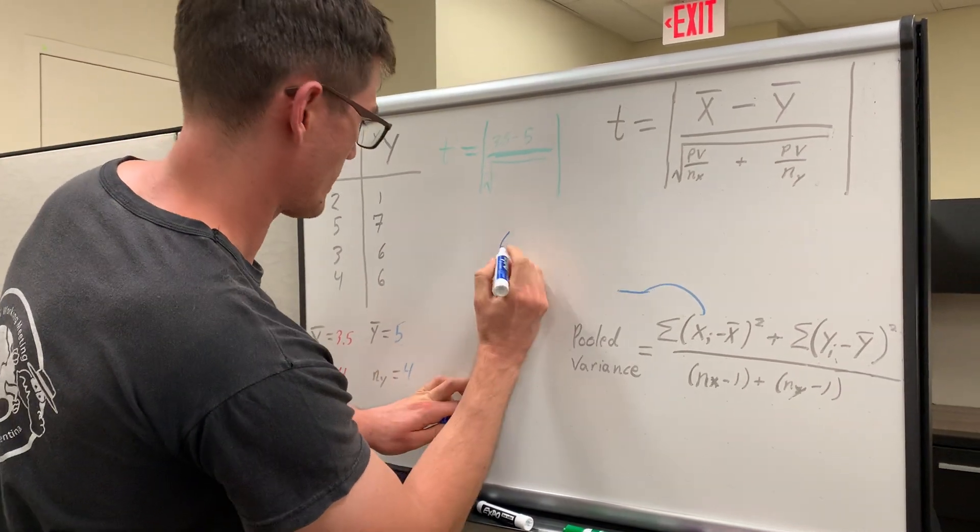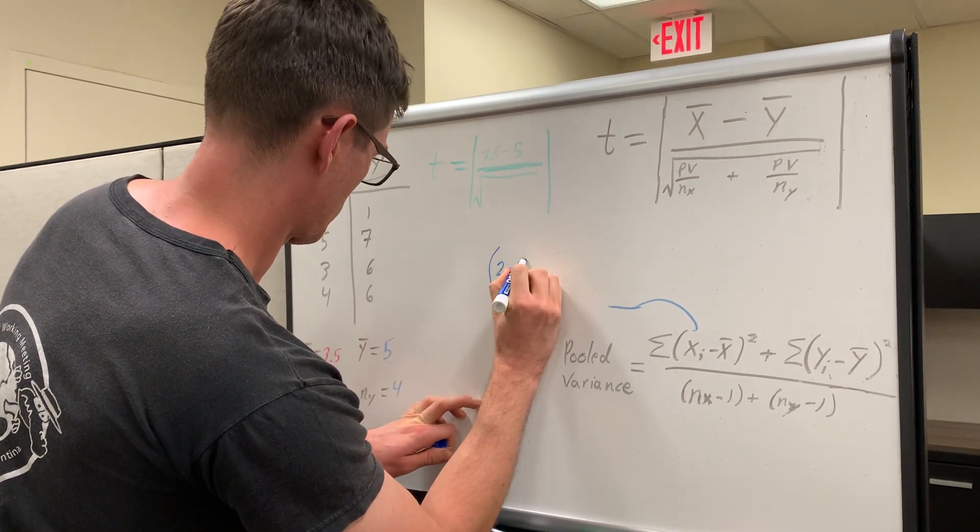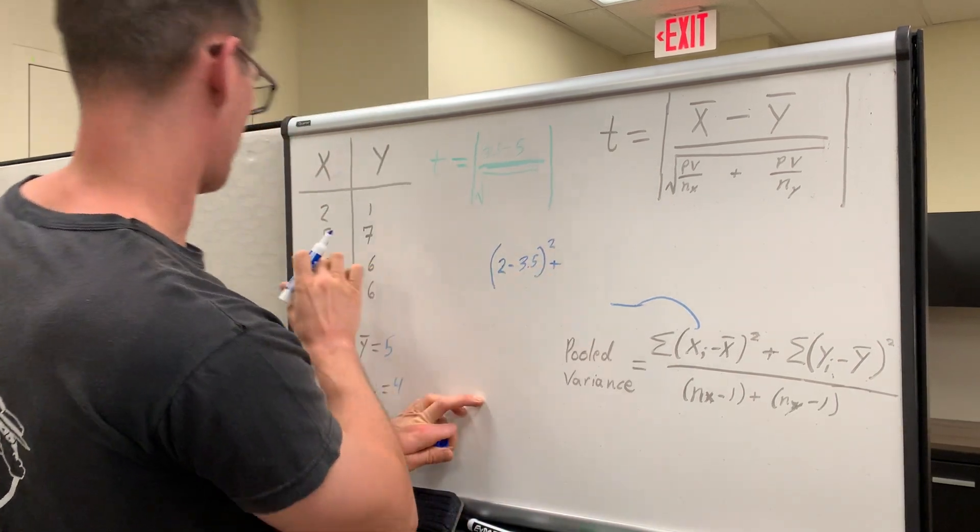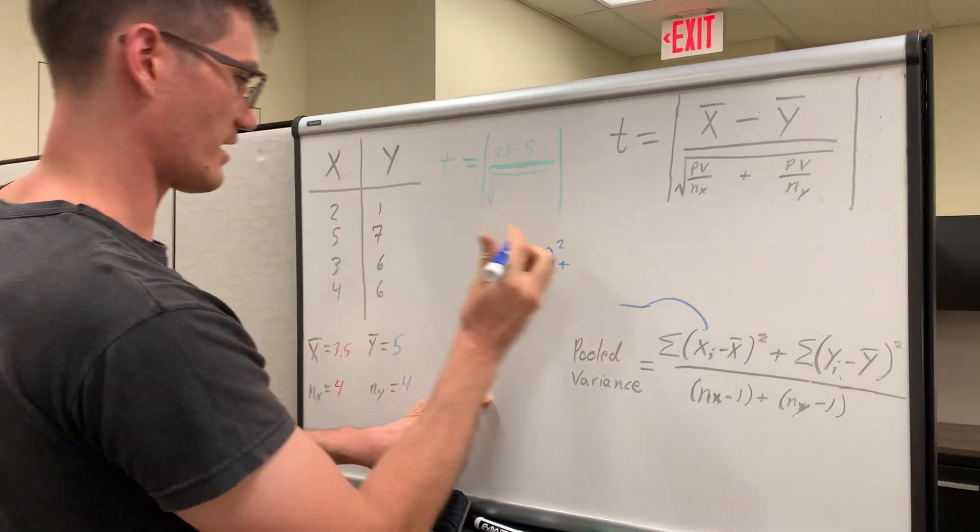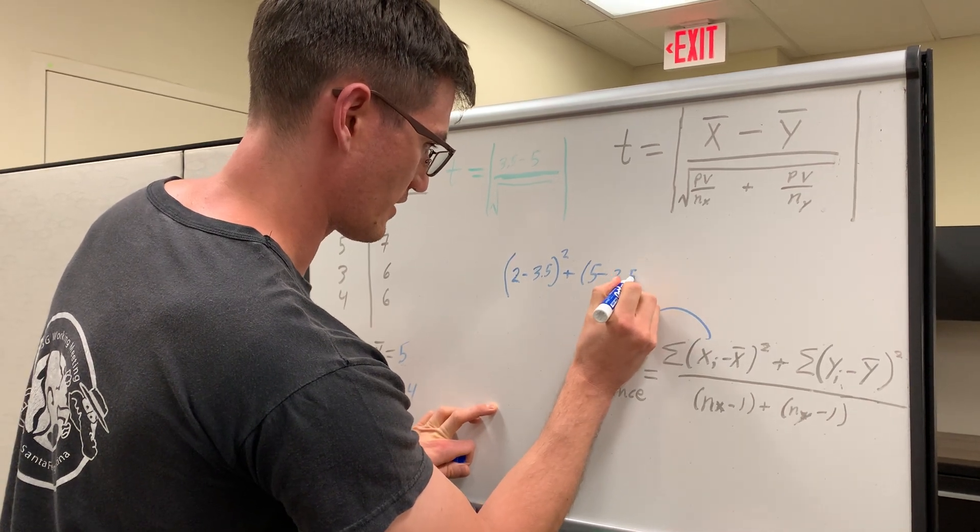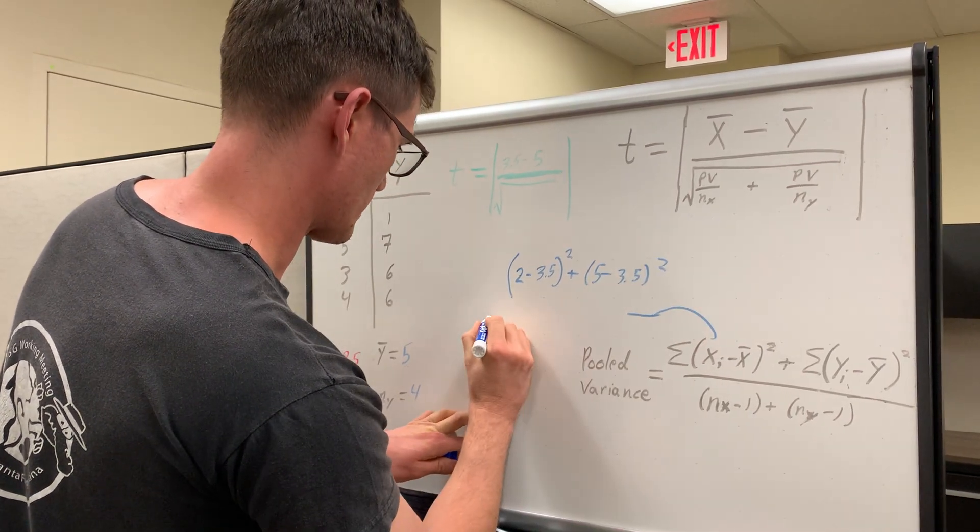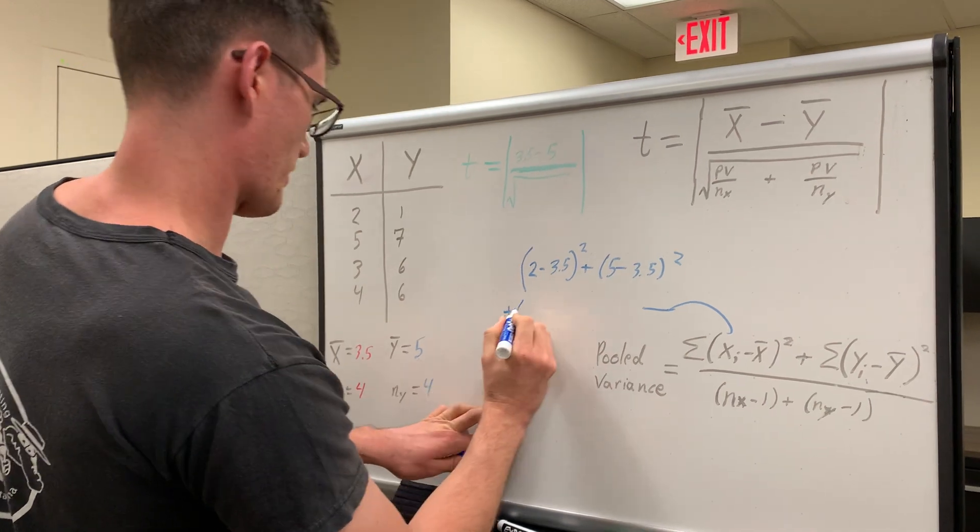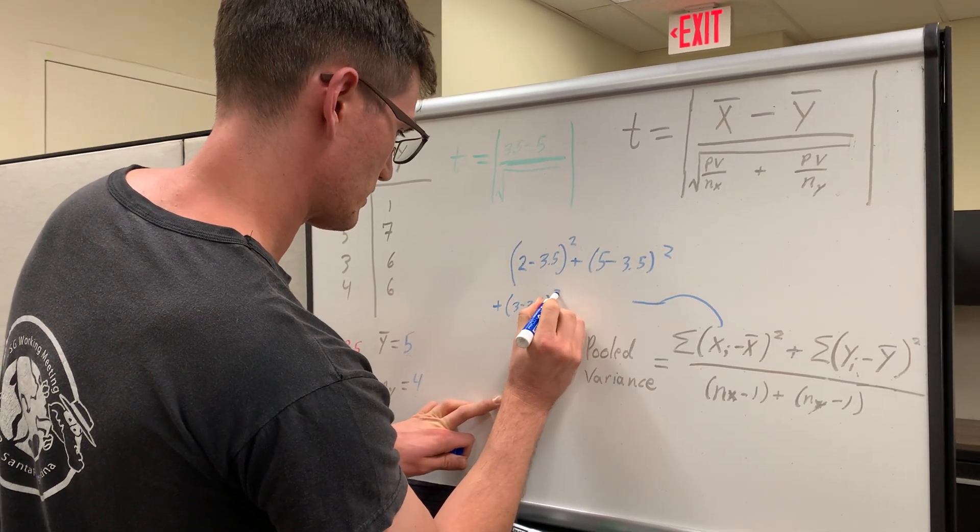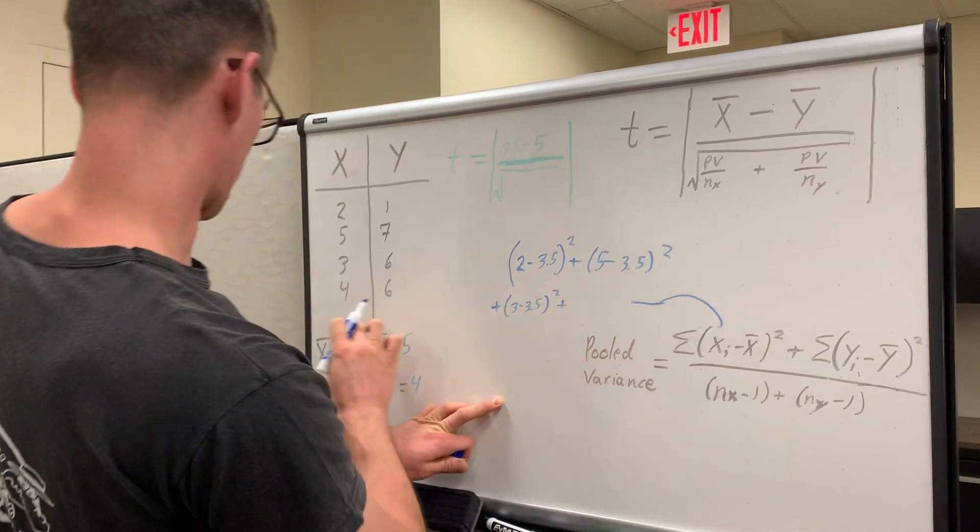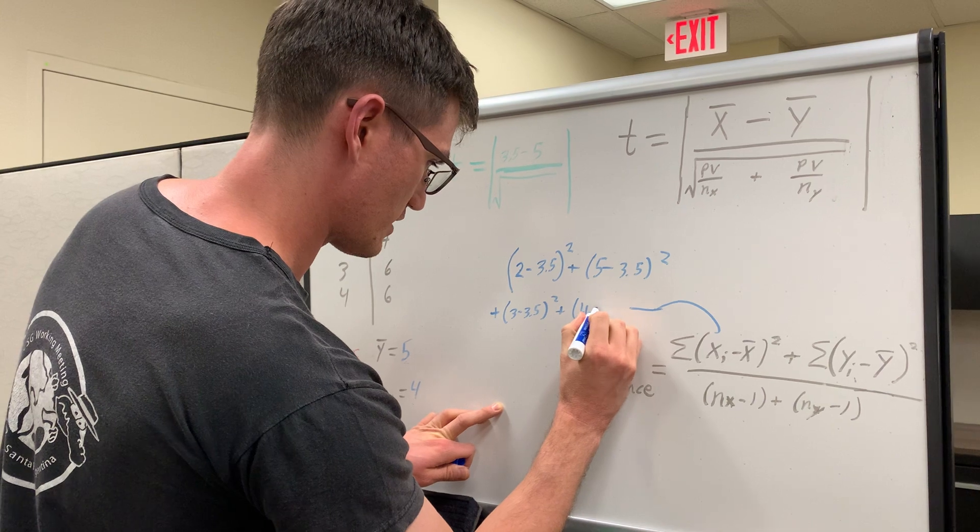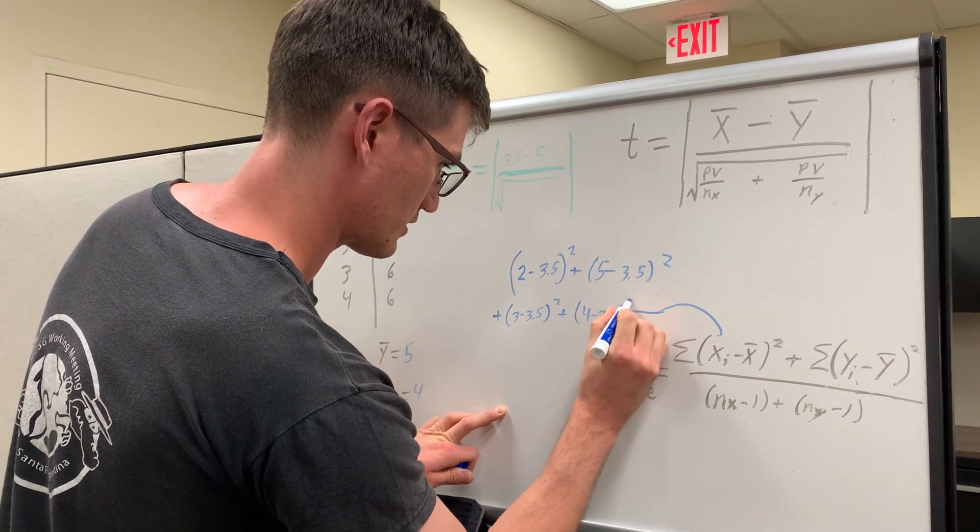So, starting with treatment x, we're going to go 2 minus 3.5, that whole expression squared, plus, what's our next iteration? 5. 5 minus 3.5 squared. I'm just going to come back down here. 3 minus 3.5 squared, plus, what's our last iteration of treatment x? 4 minus 3.5 squared.